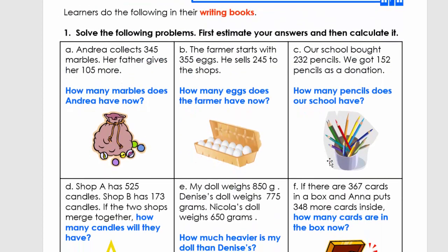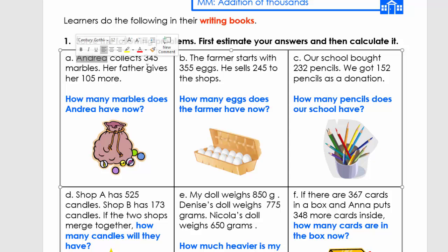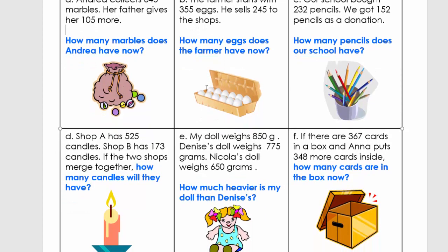Let's go to the problem solving. You have different examples here. Andrea collects 345 marbles; her father gives her 105 more. We've highlighted the question: how many marbles does Andrea have now? The phrase 'how many marbles does Andrea have now' already gives us an indication that we need to add. The numbers are 345 and 105 — there are no hidden numbers here. The characters are Andrea and her father, so you can make a drawing. Pause your video at this stage and solve these three problems. It's important to explain the different steps of how you solve it.